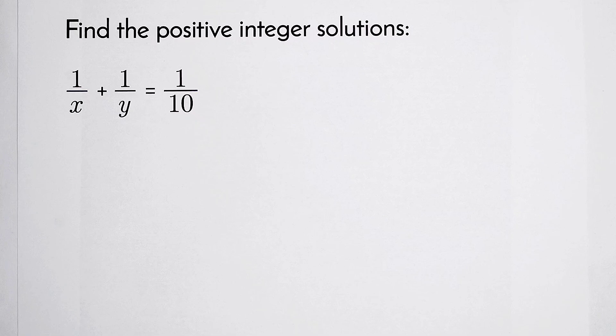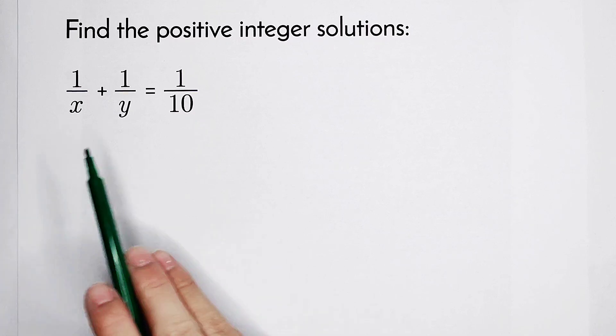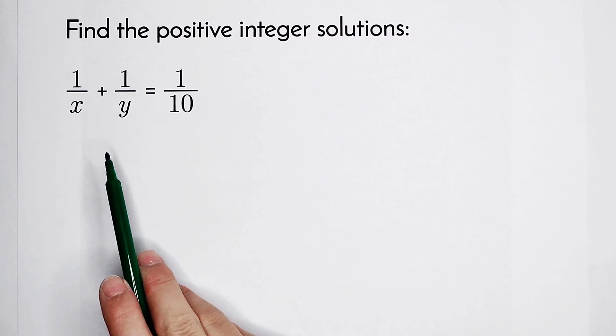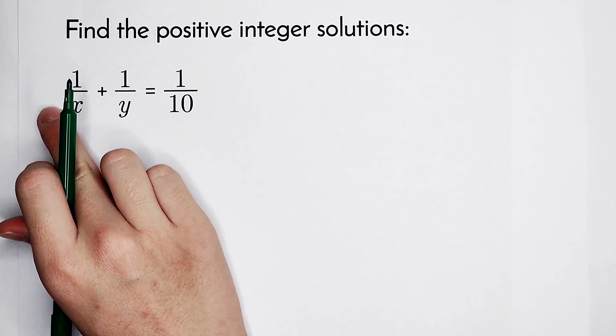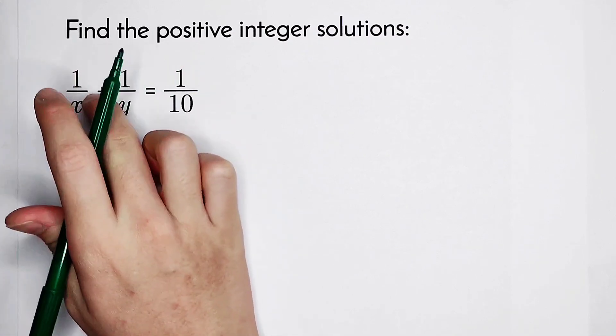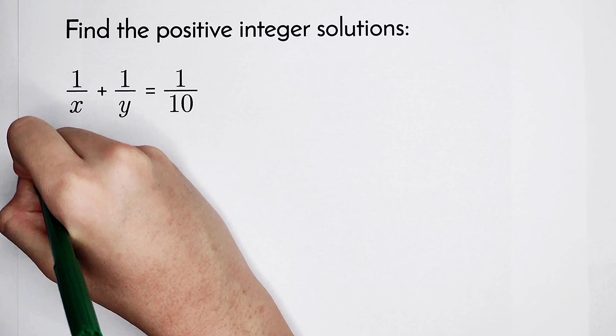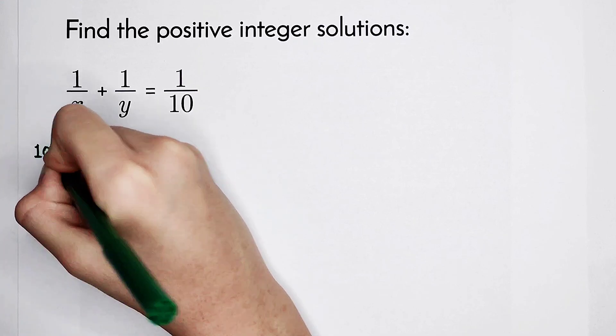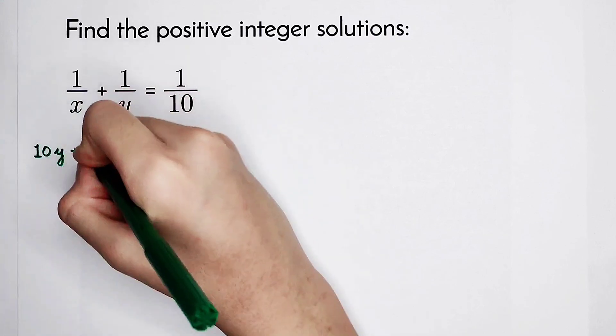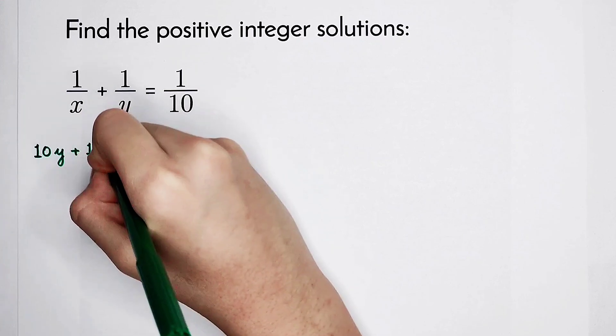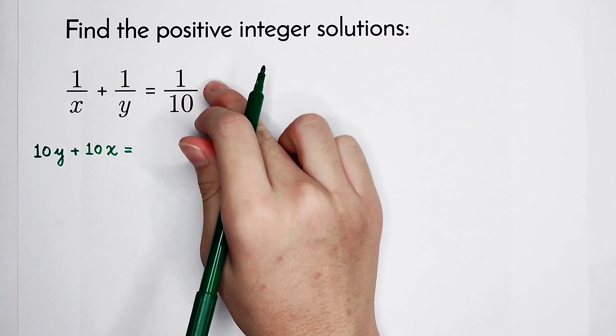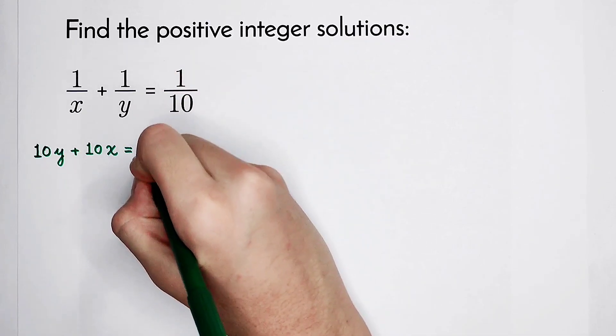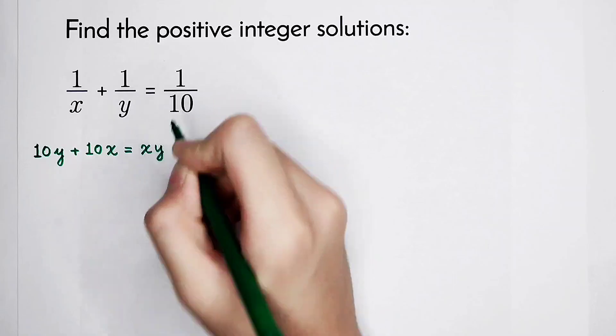As a first step, we should multiply both sides by 10 times x times y. Why? Because they are the denominators. So here, 10 times x times y times 1 over x leaves 10y. Here, 10 times x is left. And 1 divided by 10 times 10 times xy is xy.